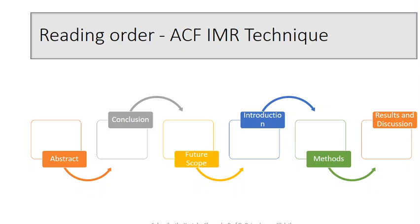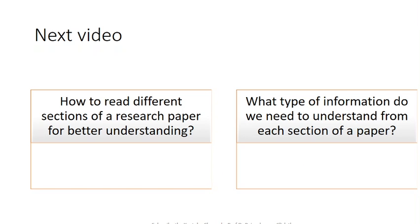Followed by the references. In the results and discussion section, you can identify exactly what kind of innovation they have brought in. Though you have to follow this order, there are still detailed things to understand — what specific information you need to take from the abstract, from the conclusion, and from each section. That I will be telling you in the next video: how to read different sections of a research paper for better understanding, and what type of information do you need to understand from each section.